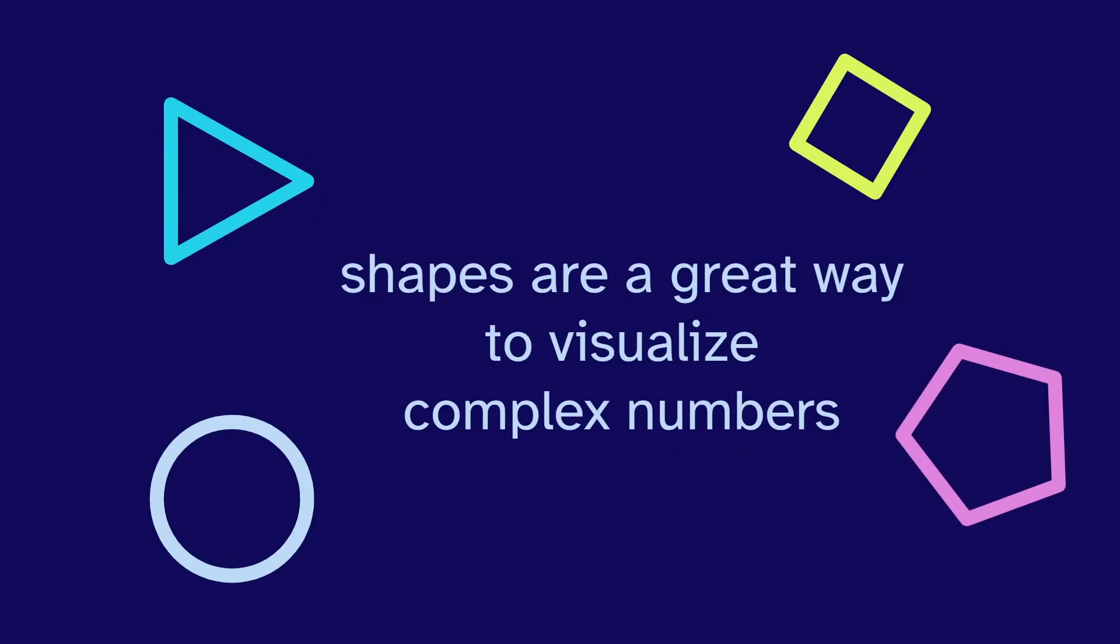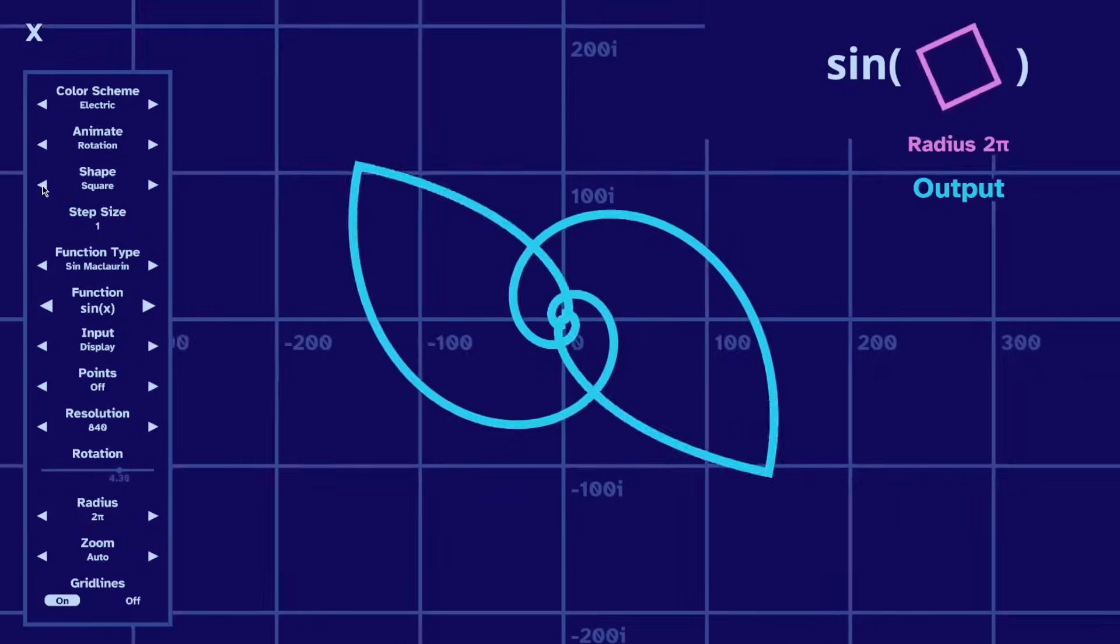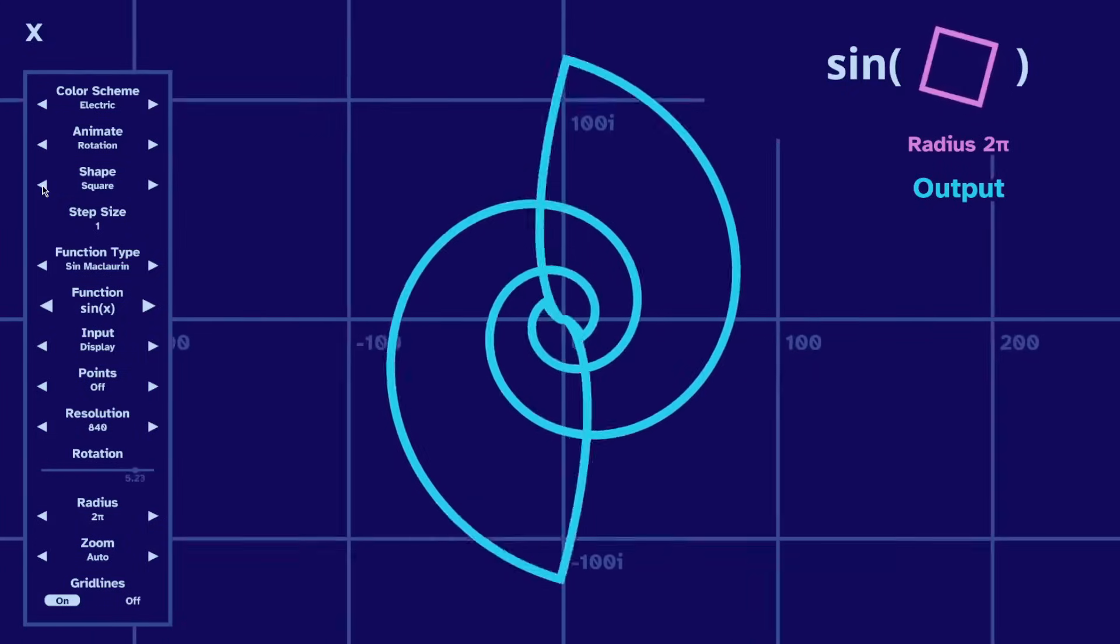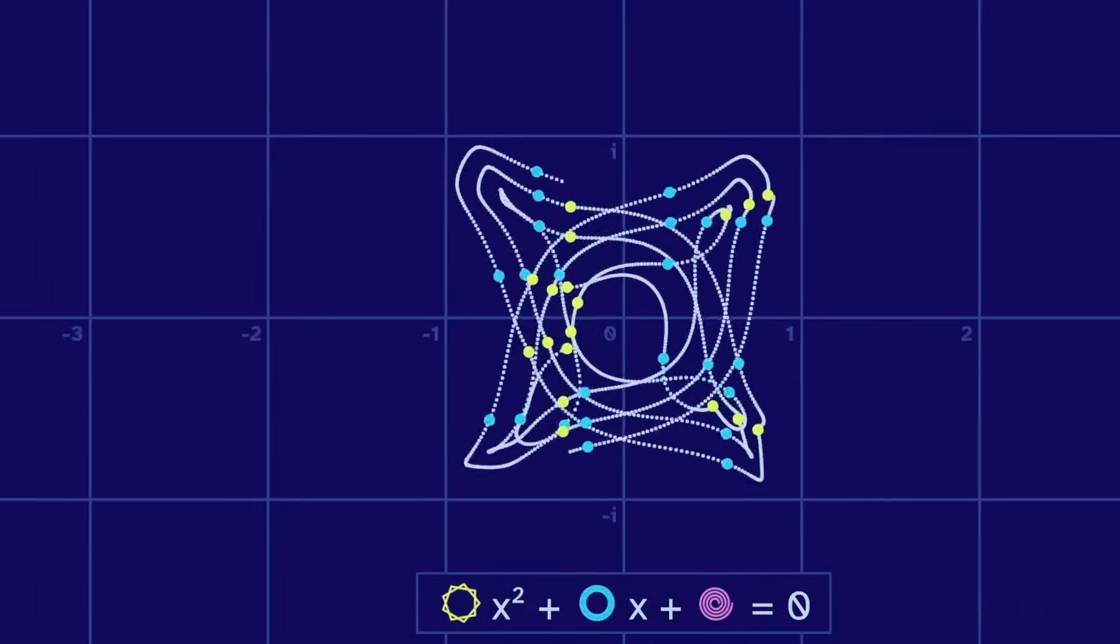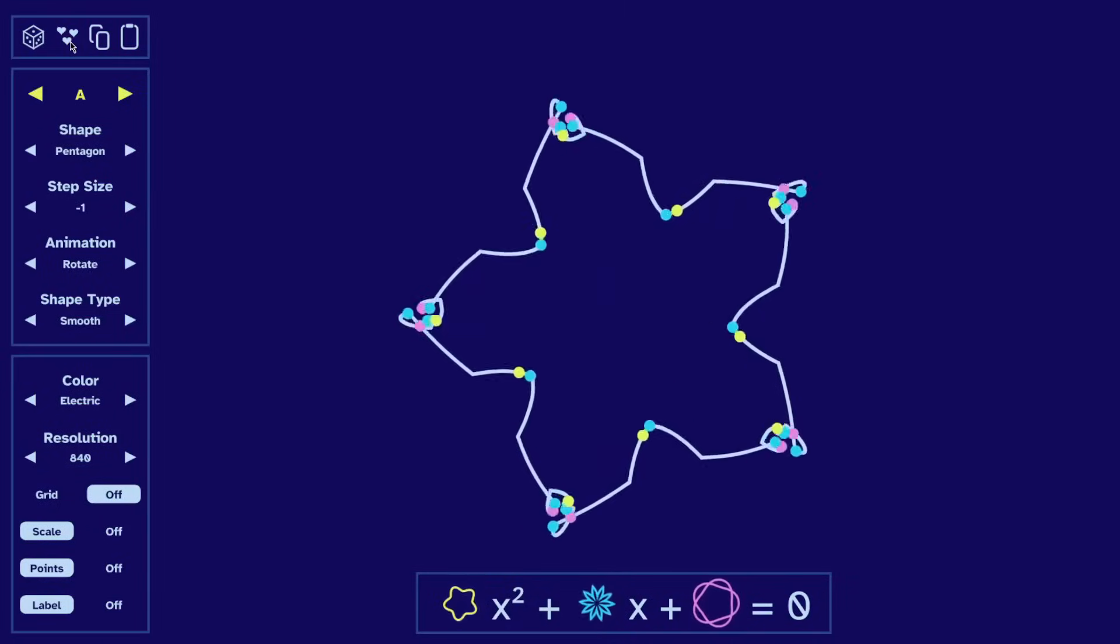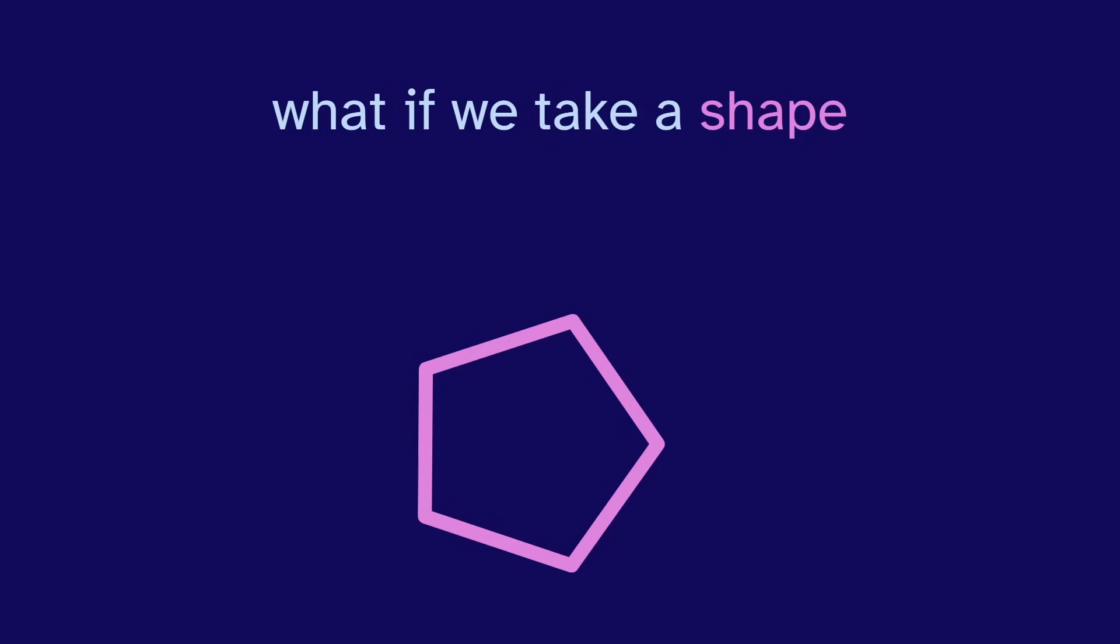I think shapes are a great way to visualize complex numbers. In recent videos, we've explored putting a shape into a function and combining different shapes together. And this naturally led to the question, what if we take a shape to the power of a shape?